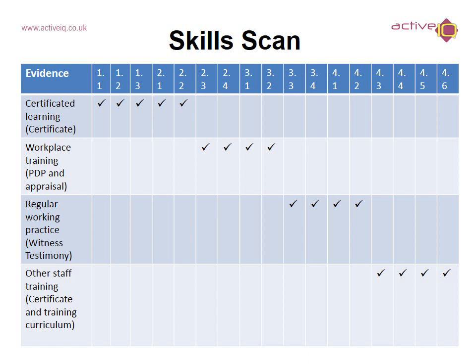Here is an illustration of a skills scan. At the top you see all the assessment criteria, and down the side you have the evidence. The learner is submitting certificated learning — a certificate, for which you would detail the exact title; workplace training, which could include personal development plans and appraisals to show competencies; regular working practice, which could include witness testimonies and CPD logs; and other staff training, which could include other certificates and training curriculum. As you can see, all of these assessment criteria have been met across the various evidence.